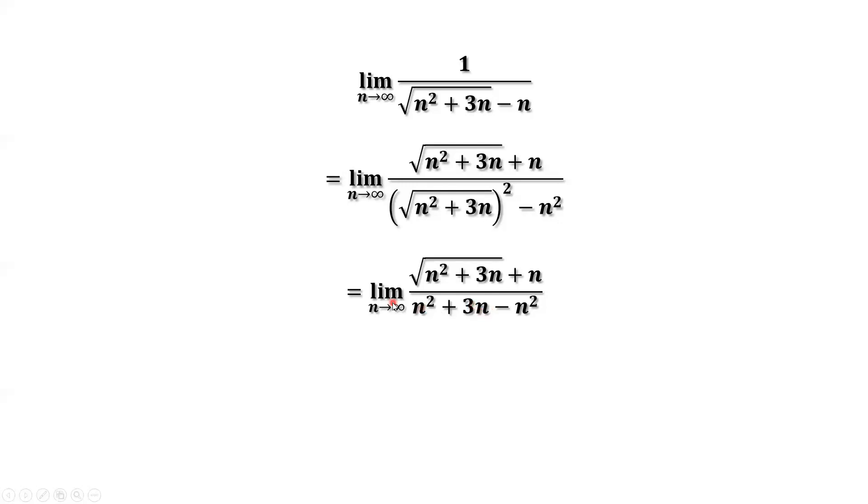We can bring 3 outside, become 1 over 3. Here we have n here. Inside part, we can split that into two parts. The first part and the second part. The second part is n divided by n, which is 1.